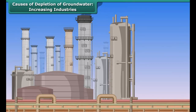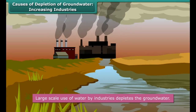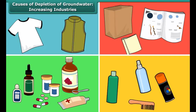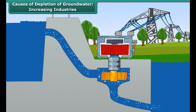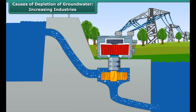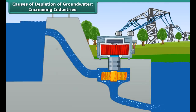Industry forms the backbone of the modern world. It is impossible to imagine life without industries. Almost all the products that we use in our daily lives — such as clothes, paper, medicines, cosmetics, etc. — are industrial products. Industrialization is an ongoing process that will never come to an end. New industries are being set up every day to meet the growing needs of a rising population. These industries draw tons of ground water every day for use in production processes, thereby depleting it.